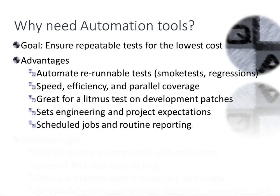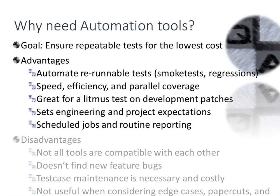If you have all reds, you have a problem. Automation is great for efficiency, speed, and parallel testing — running the same test across 100 different devices simultaneously. It's also great as a litmus test on development patches. When developers finish a feature or fix a bug and check it into the code repository, you can quickly test to see if that patch works before landing it and causing bugs.